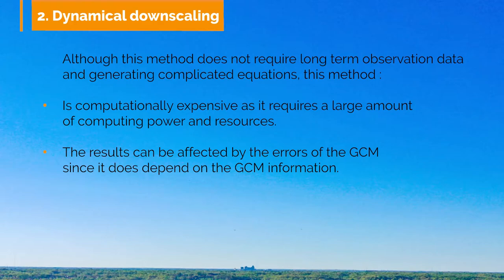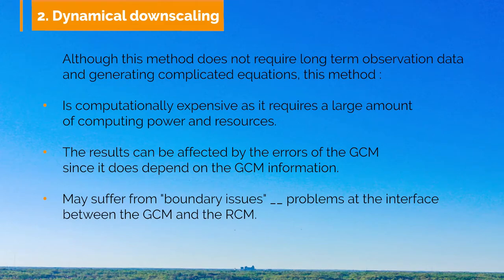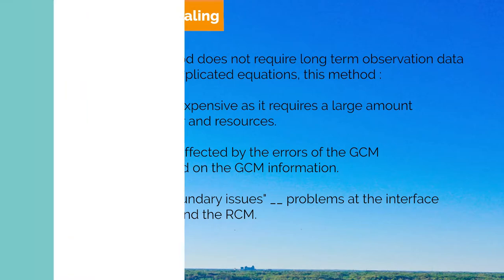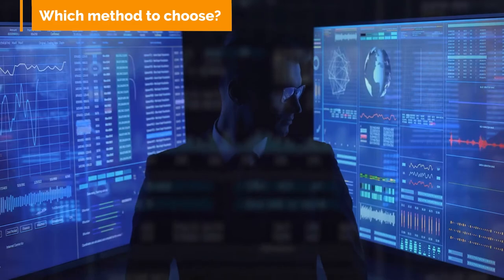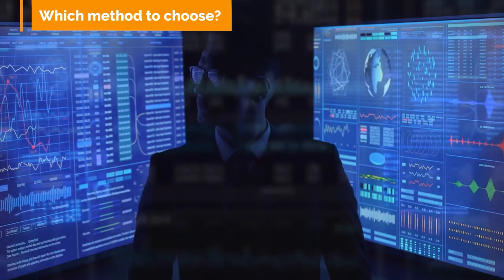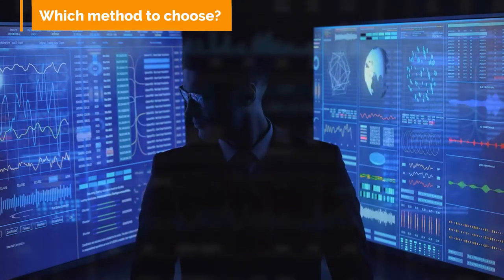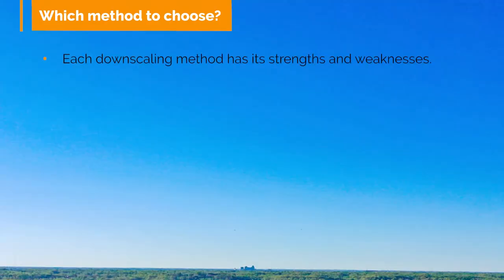Finally, RCMs and GCMs may suffer from what we call boundary issues — problems at the interface between the GCM and the RCM. This issue arises because of the one-way interaction between the two models, leading to mismatches or unrealistic values of atmospheric variables like moisture or temperature at the RCM boundaries. There is no single method considered best by the scientific community, as each downscaling method has its own strengths and weaknesses, and the best option depends on the application and availability of resources.